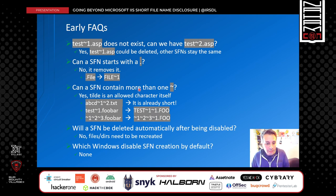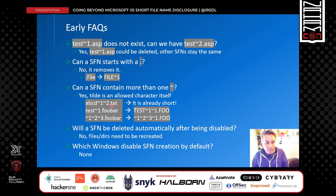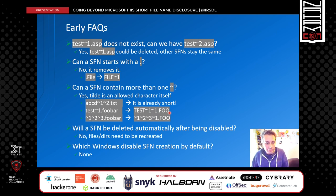Can a short filename contain more than one tilde character? The answer is yes — tilde is an allowed character itself. If you have a file called abcd~1~2.txt, there is no short name equivalent because it is already short: 8 characters in the name and 3 in the extension, so it is 8.3 compatible. If you have a file called test~1.foobar, the short name will be test~1~1.foo. It is confusing, but that's how Windows shortens it, because the tilde character is allowed and Windows treats it as a normal character.